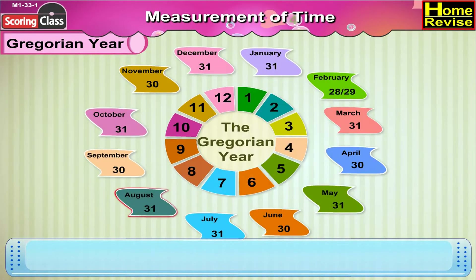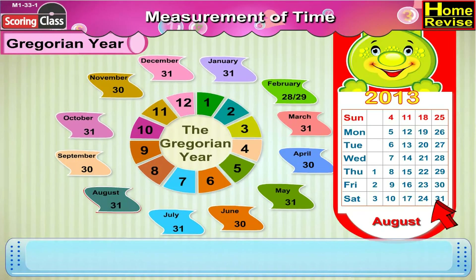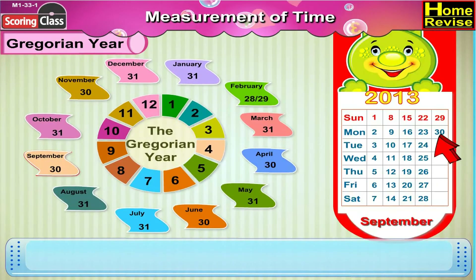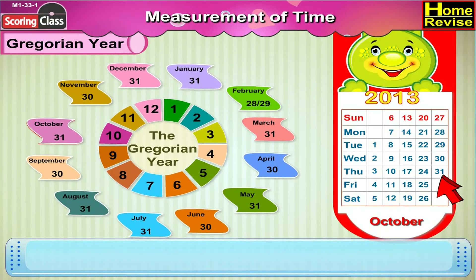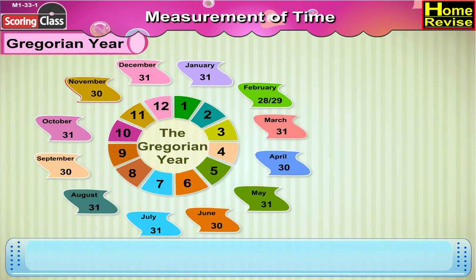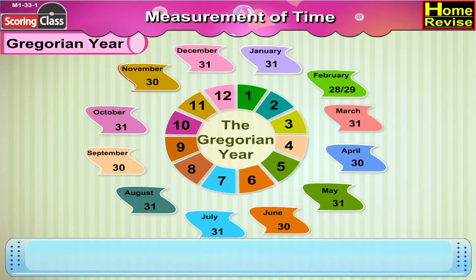The eighth month is August, with 31 days. The ninth month is September, with 30 days. The tenth month is October, with 31 days. The eleventh month is November, with 30 days. The twelfth month is December, with 31 days.